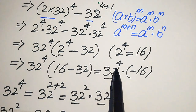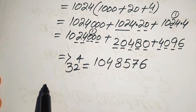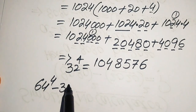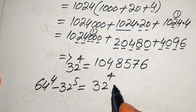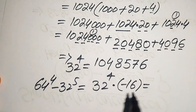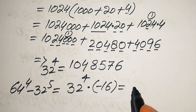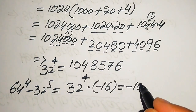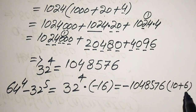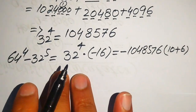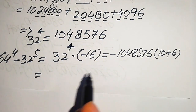Now we move backward and put the value of 32 to the power of 4 into our expression, and we multiply this value by minus 16. So the given expression 64 to the power of 4 minus 32 to the power of 5 equals 32 to the power of 4 multiplied by minus 16. We write the negative sign in front and it becomes minus 1,048,576 times 16. We break 16 as 10 plus 6, and when we multiply this number by 10, we place a 0 at the end, giving minus 10,485,760.